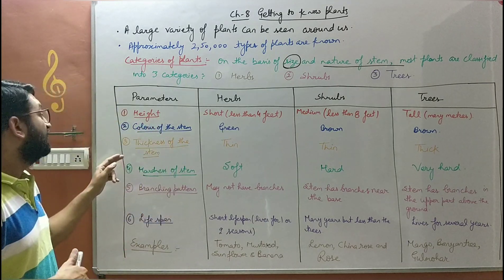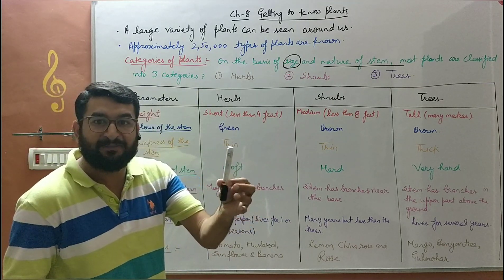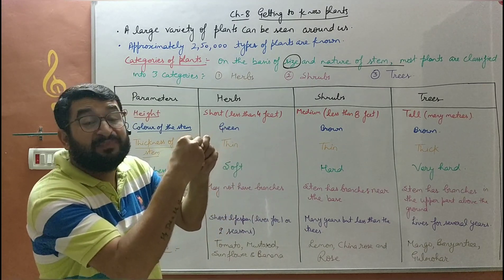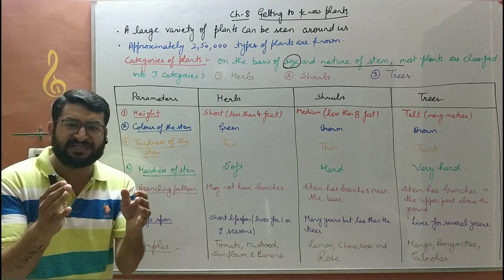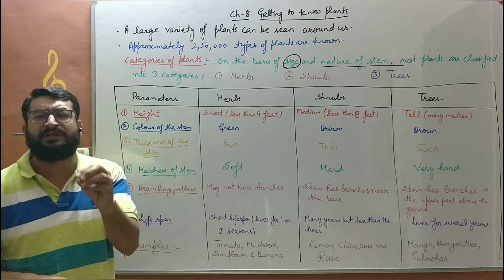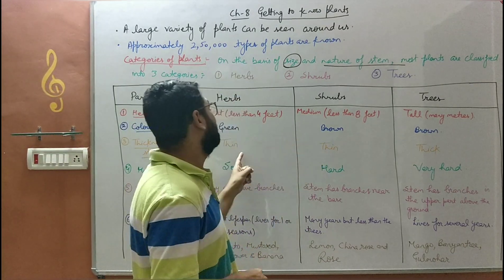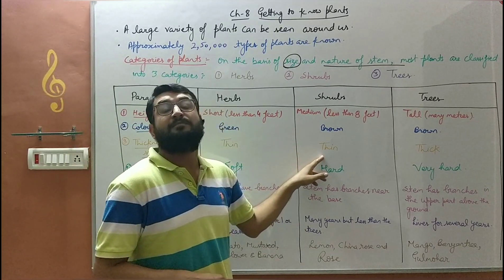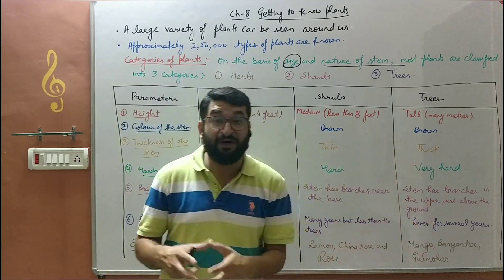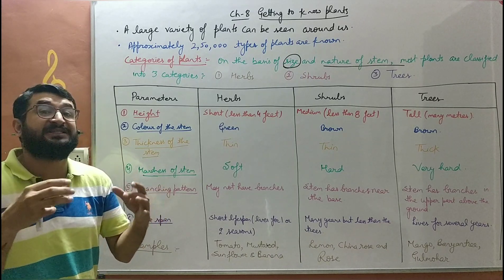Next is the thickness of the stem — its diameter. Herbs have a very thin stem. Shrubs also have a thin stem but it is thicker than that of herbs. Trees have a thick and broad stem.